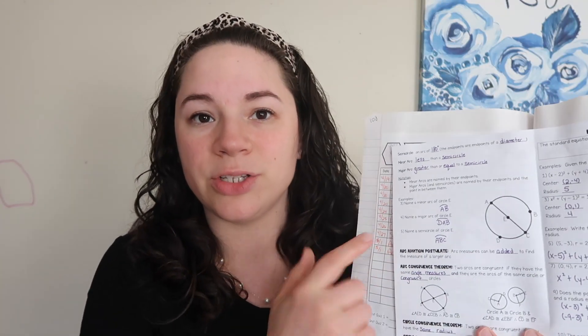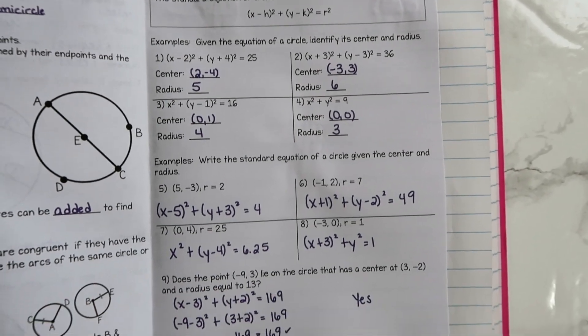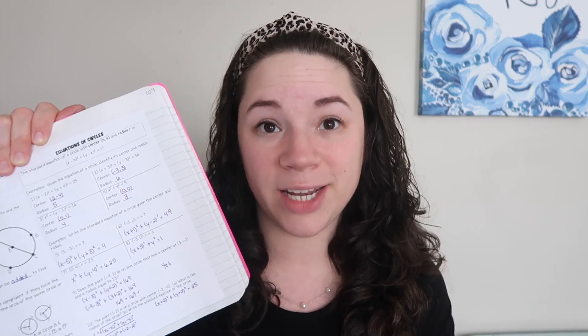We also go into arcs — we talk about major and minor arcs, but really students need to know what a semicircle is out of all of that. Also on the first day, if it fits, we go into equations of circles: just the basics, how the standard equation works, how to find the center and the radius from the equation, and vice versa. That's the first day.